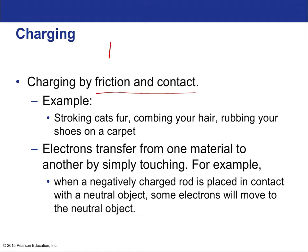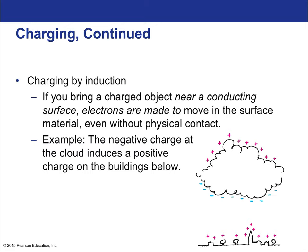You can charge something by friction and contact—essentially converting mechanical energy into electrical energy. Electrons are the carriers of electrical energy because protons are anchored to the nucleus. Examples include stroking cat's fur, combing your hair, and rubbing your shoes. When a negatively charged rod is placed in contact with a neutral object, some electrons move to the neutral object—that is charging through direct contact.